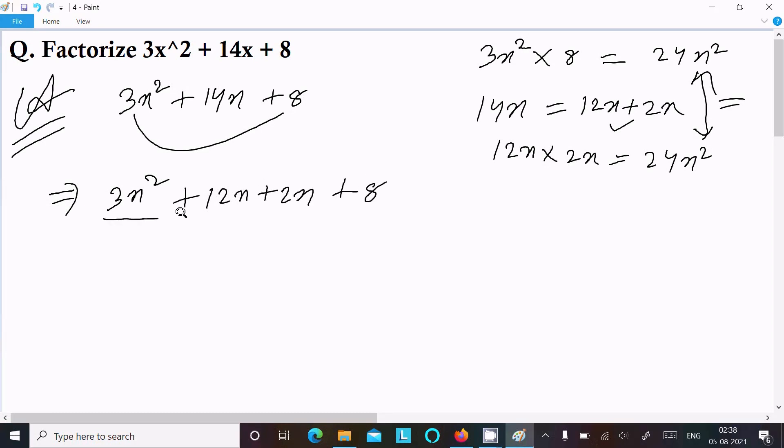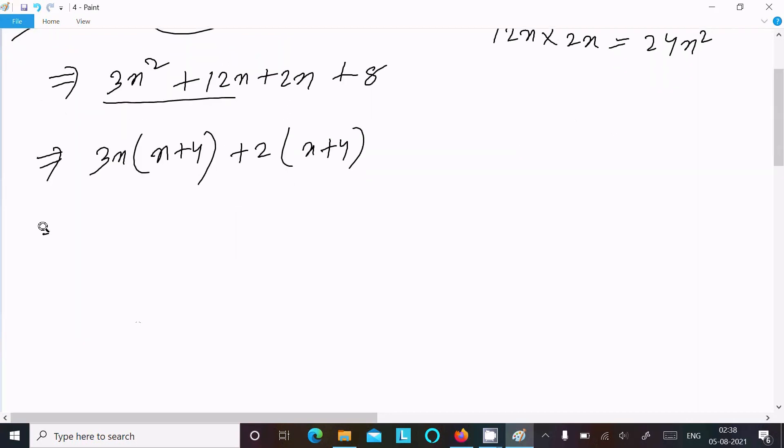After that, x + 4 is the common, so here it comes (x + 4)(3x + 2). So this is the answer of this equation. So this is the way we can do the factorization of this equation.